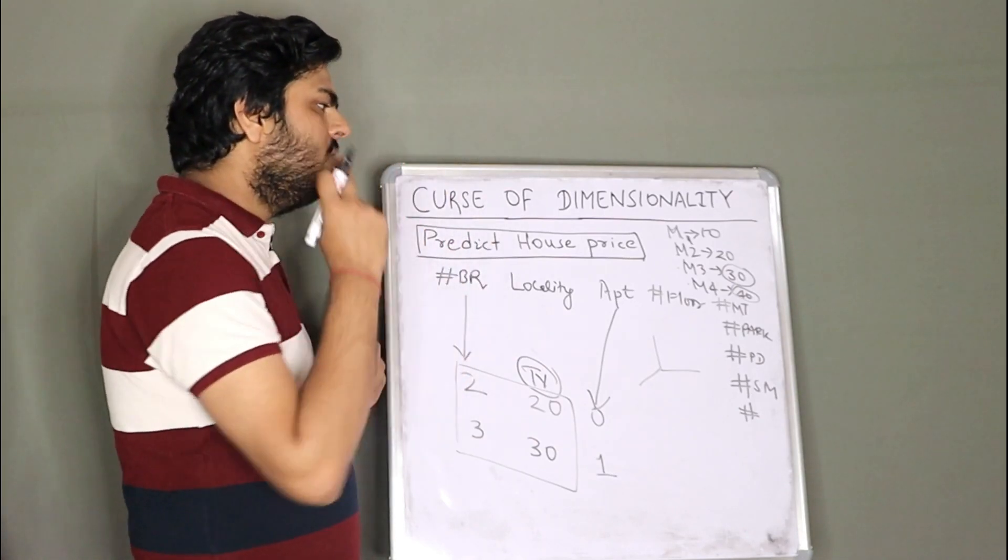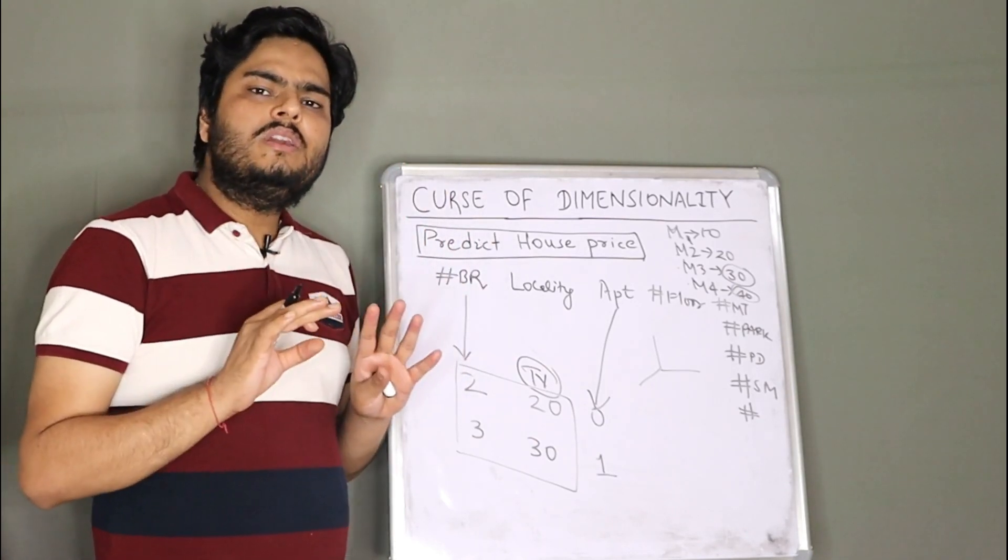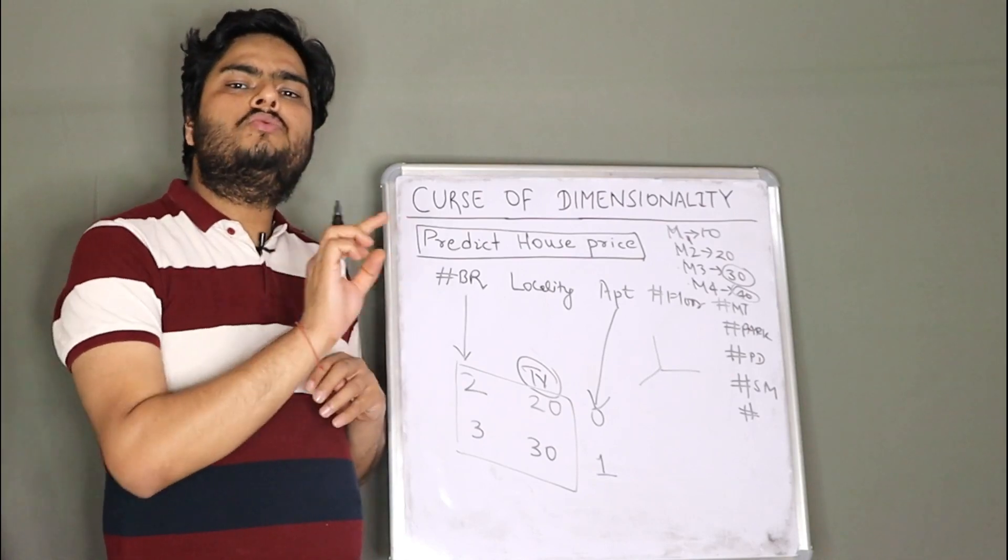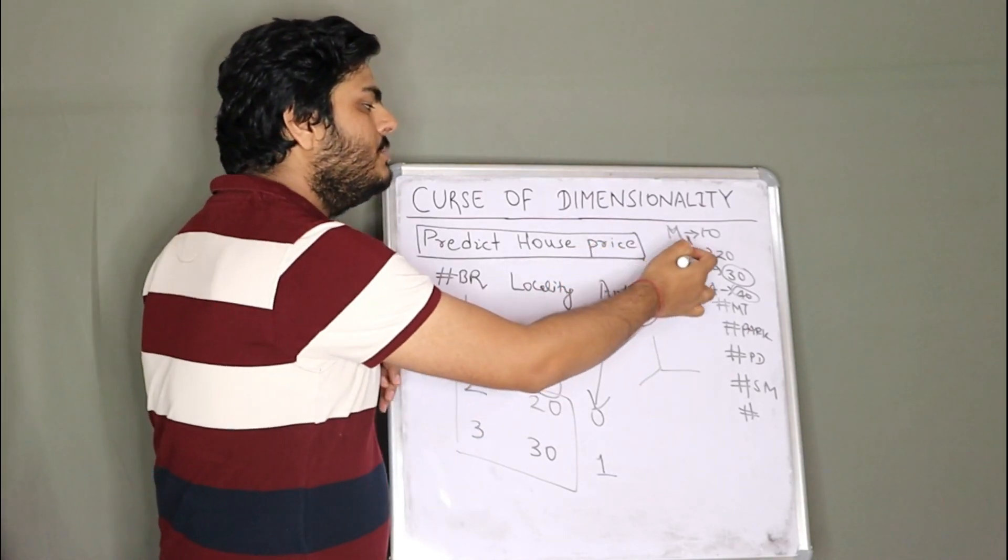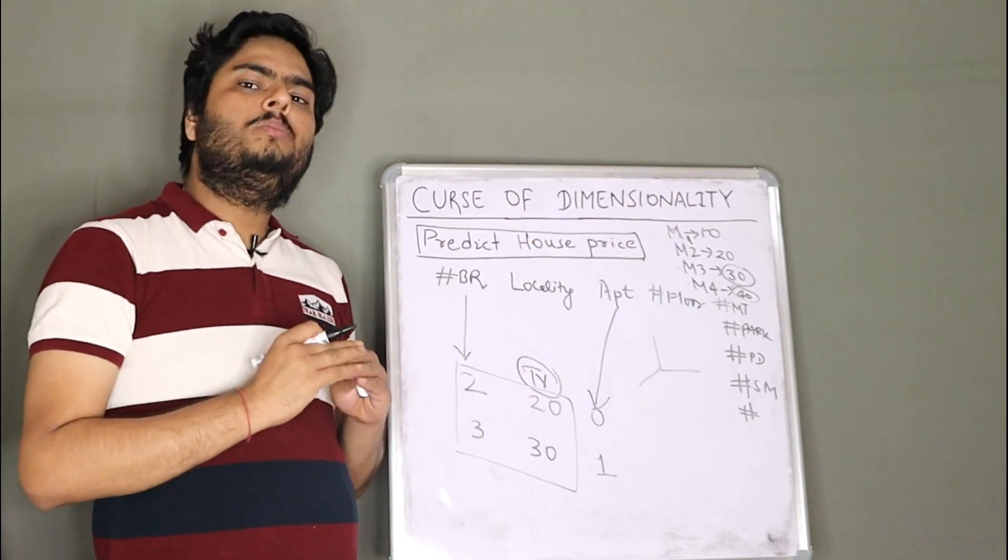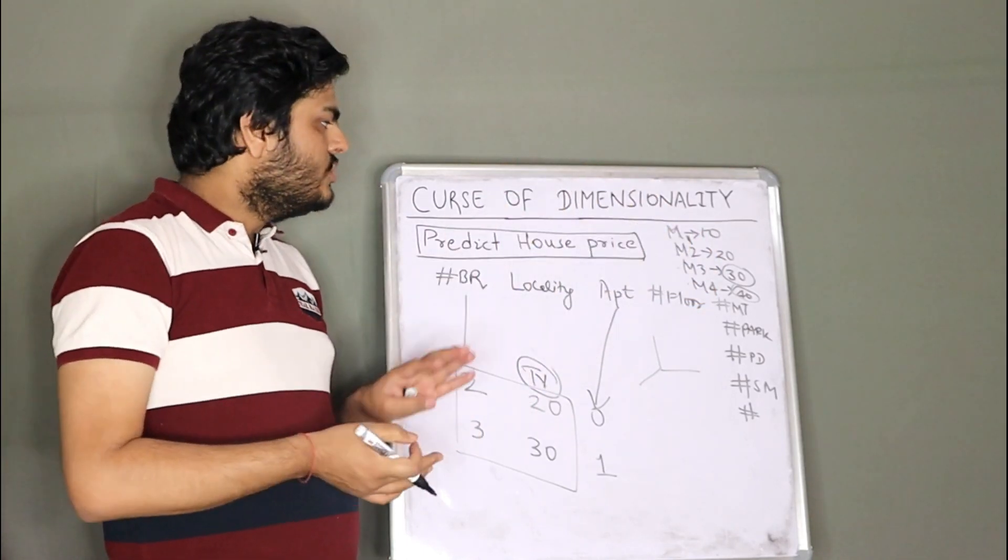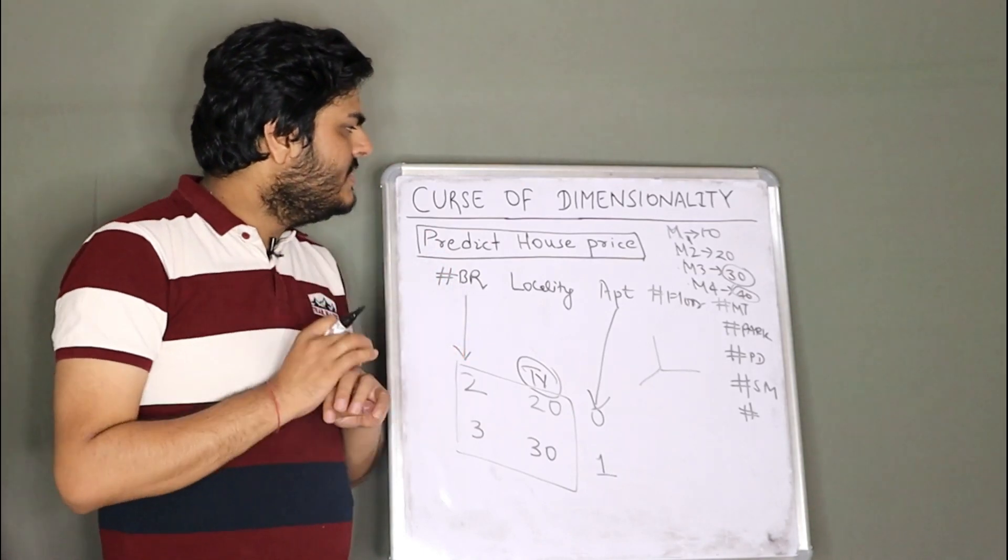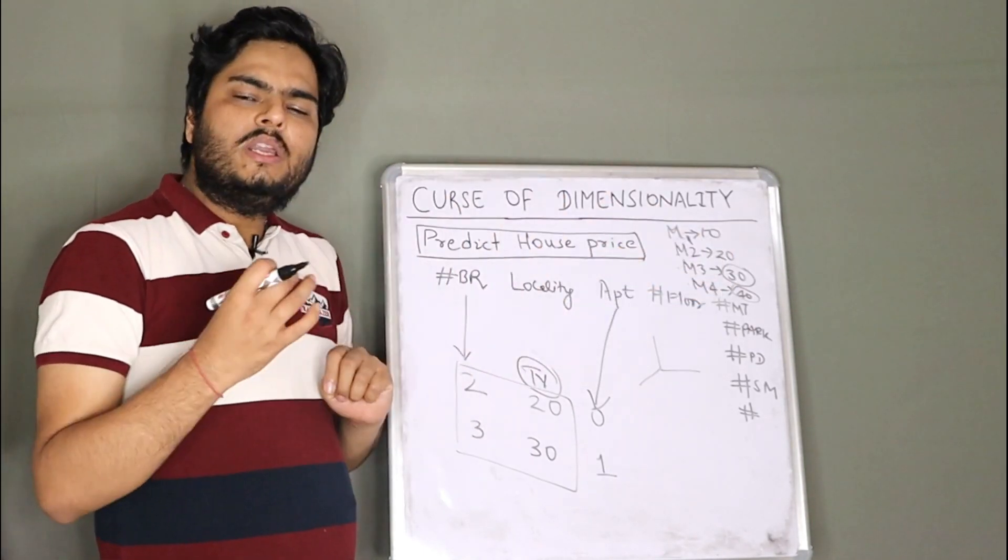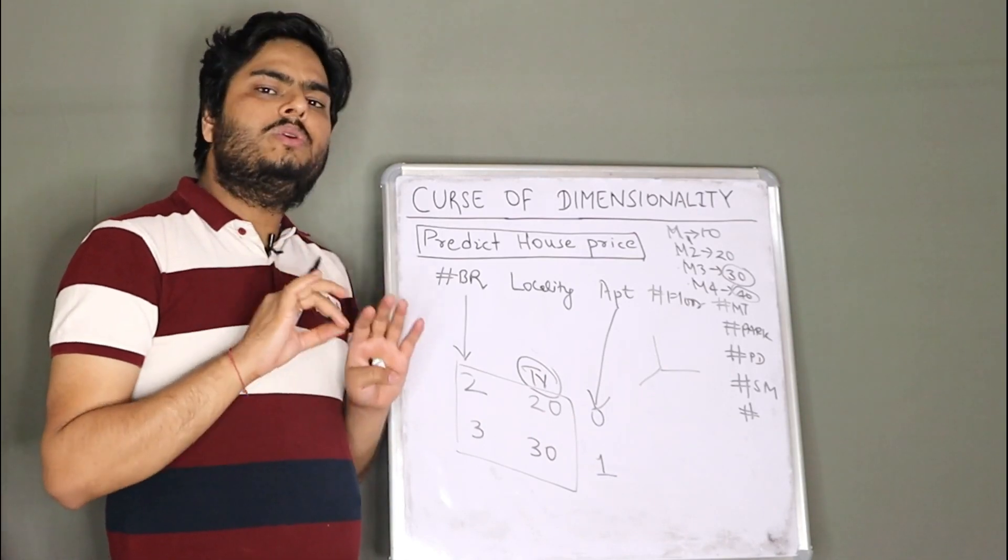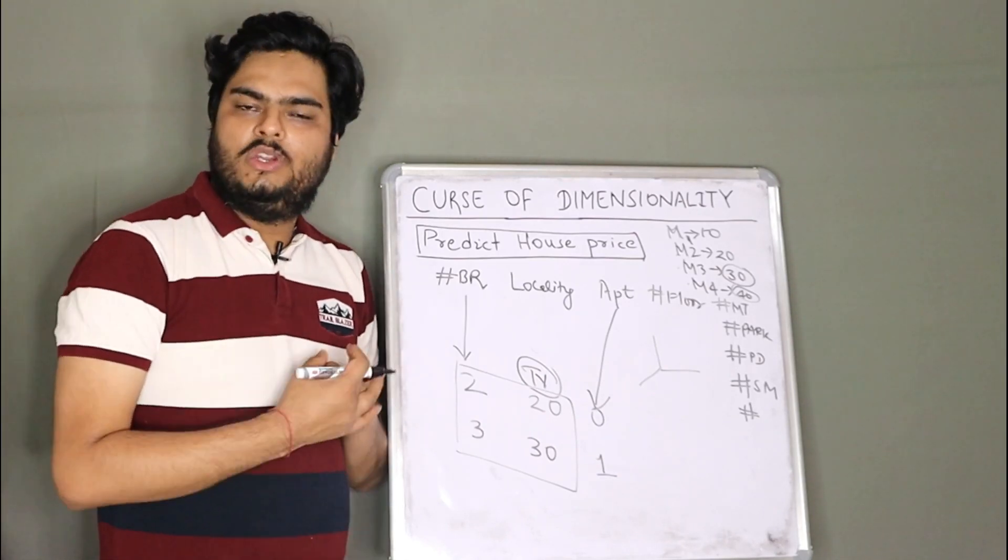So I hope you understood what is curse of dimensionality. It is nothing but where do you find that sweet spot? Where do you find that threshold? In this case, M2 is your threshold. You do not go beyond 20 features. So I'm also going to tell you in my upcoming videos, how do you choose these 20 features, right? So few techniques I have explained like RFE and others. I am going to explain some more techniques in my upcoming video.